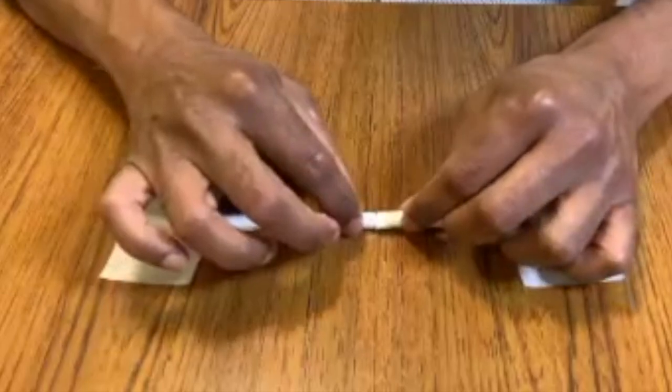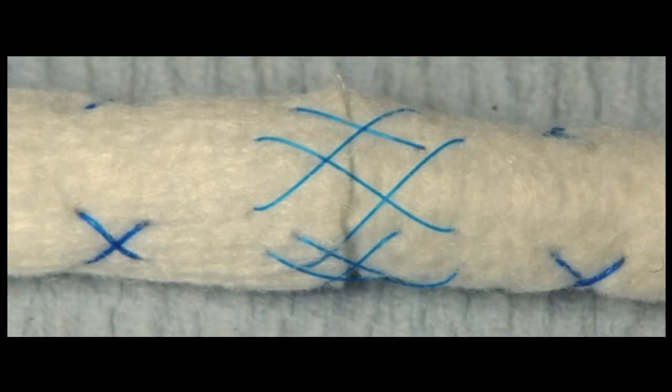You can now practice any form of tendon repair you wish, both the core and epitendinous repair. After you've done your repair, you should visually assess your repair for neatness. Ideally, the repair should not be bulky nor should it have any frayed bits of tendon sticking out.